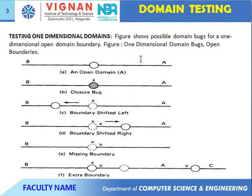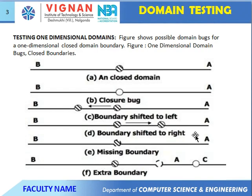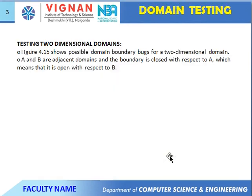Testing one-dimensional domains: one is the open domain, next one is the closing bug, incomplete closing. Next, open boundaries and boundaries shifted left, boundaries shifted right, missing boundaries, extra boundaries. These are the boundary testing for one-dimensional domains — closed domain, closed bug, left-shift, right-shift, missing boundary, extra boundary — one-dimensional errors.